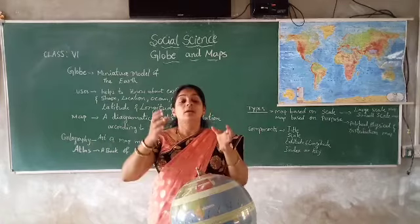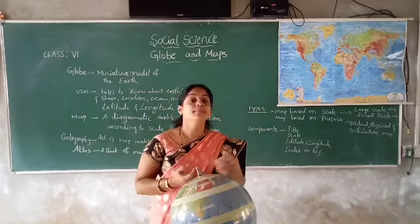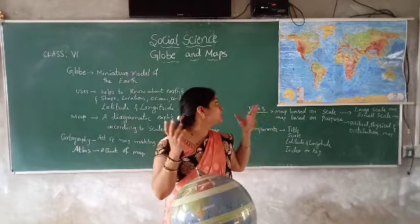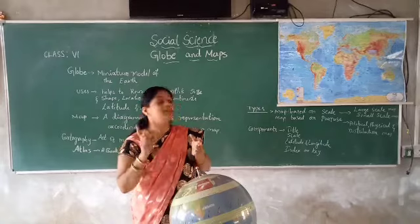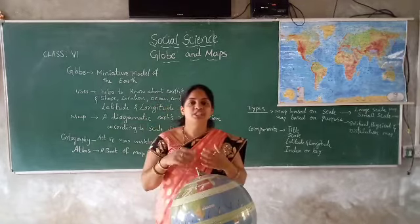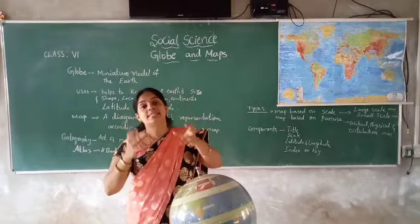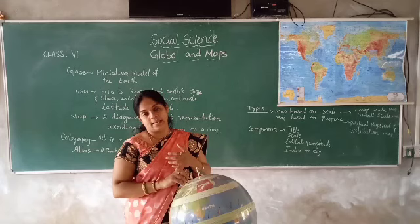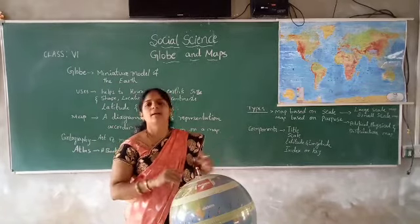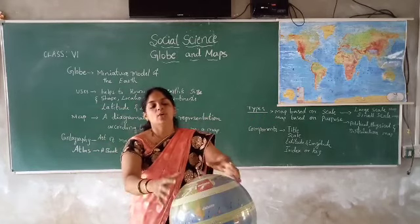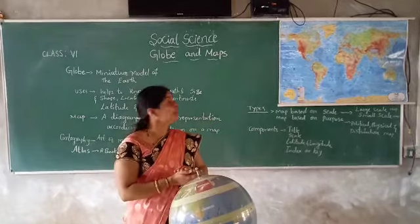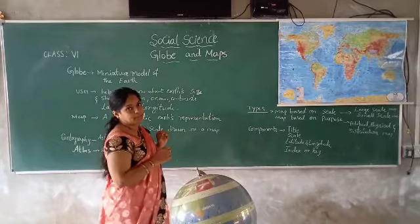But because of the limitations, our geographers made the map. What is that? Map. This map means there are two types: one is based on the scale and another one is based on the purpose. Purposefully we are using it — for example, if we want India's physical features, then we can get the Indian physical map, or political map, or world map.